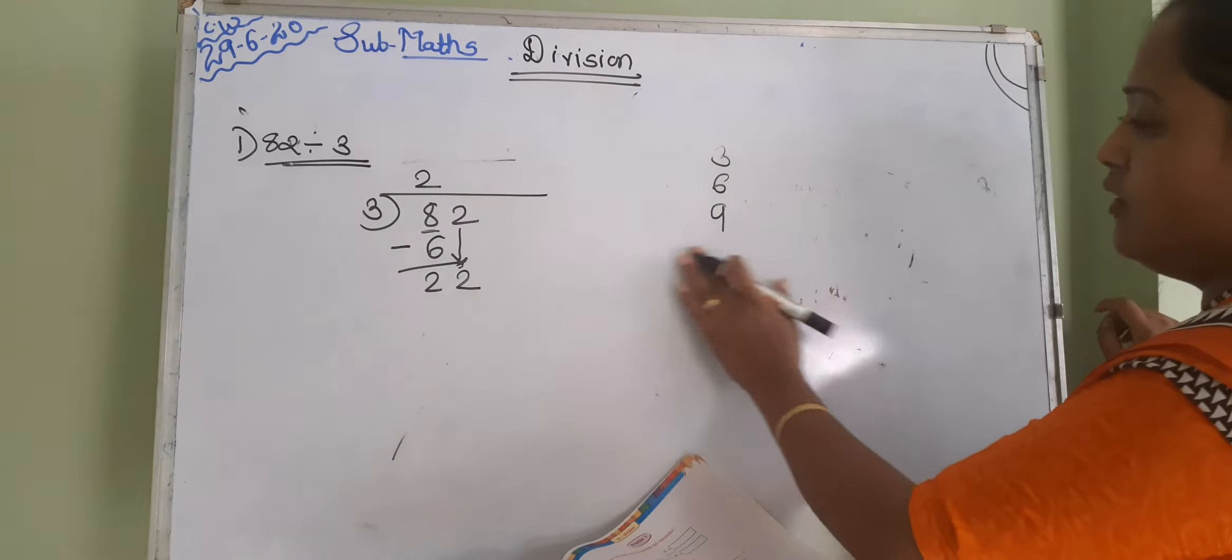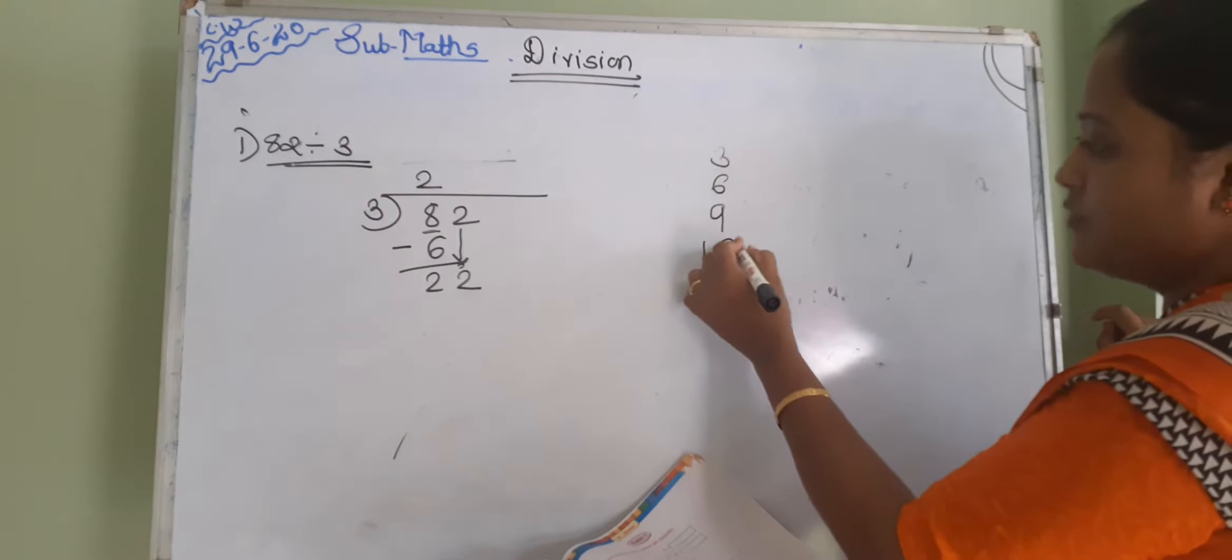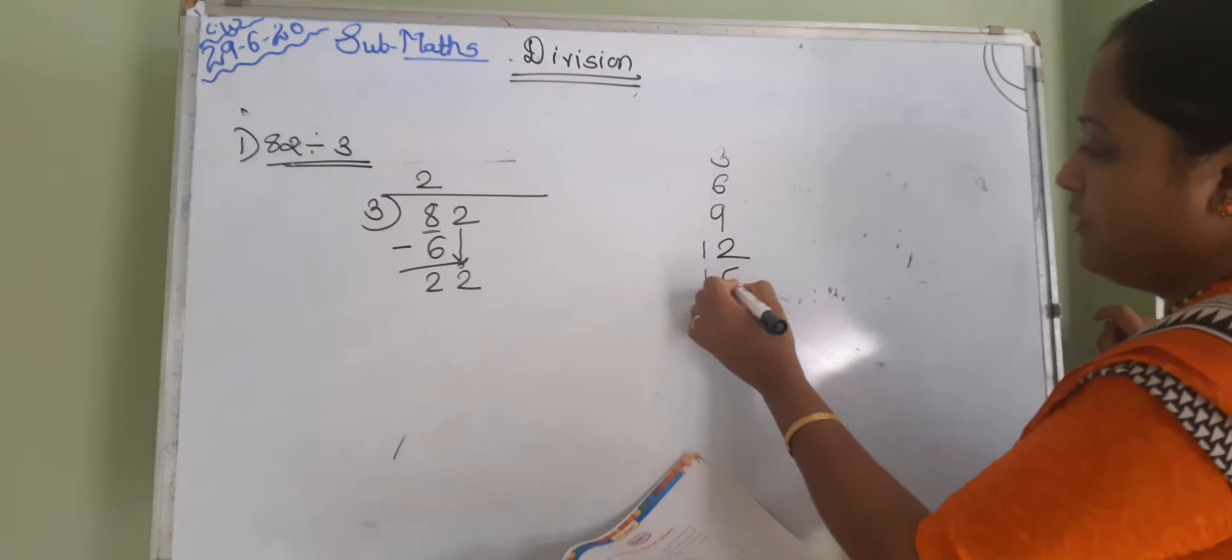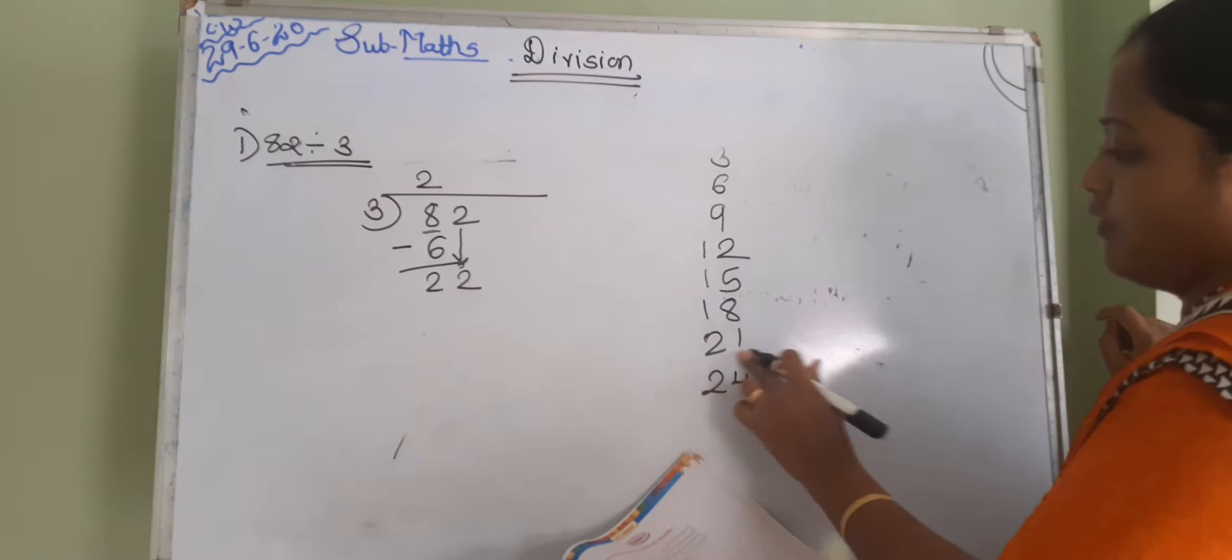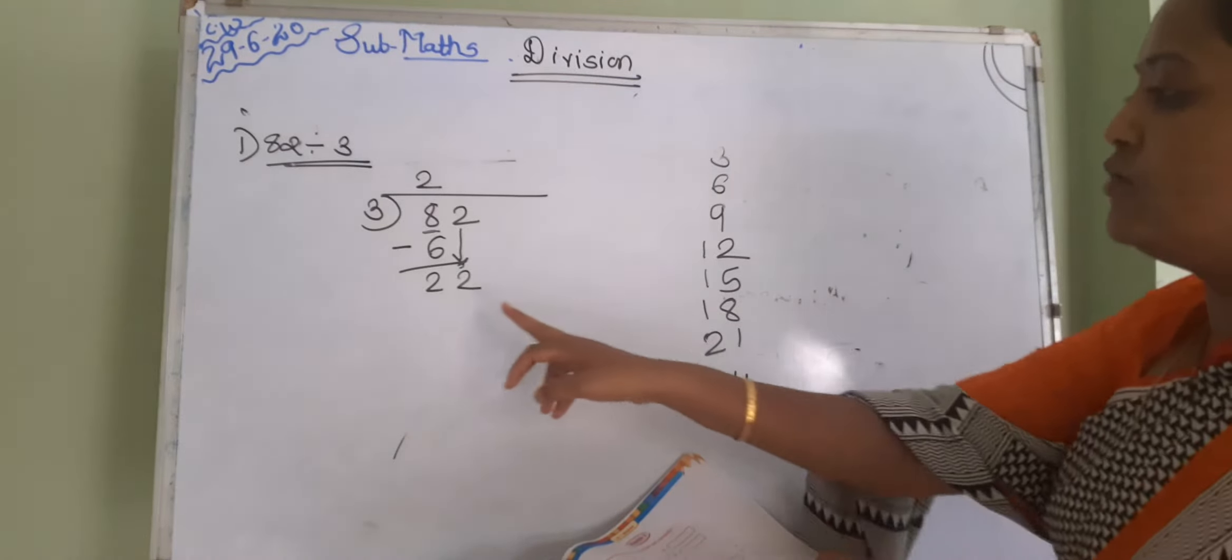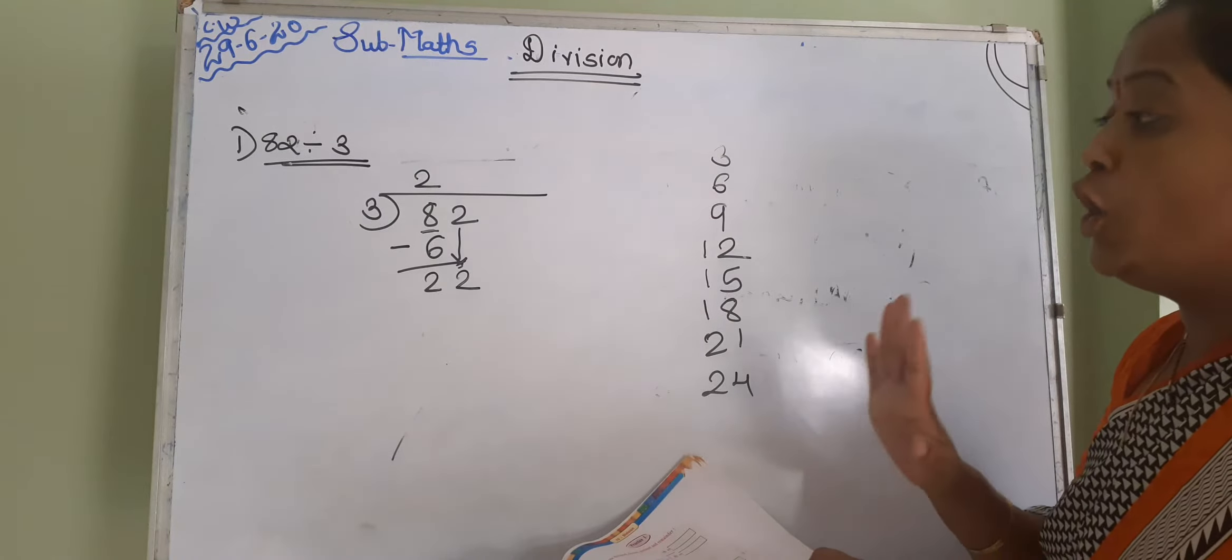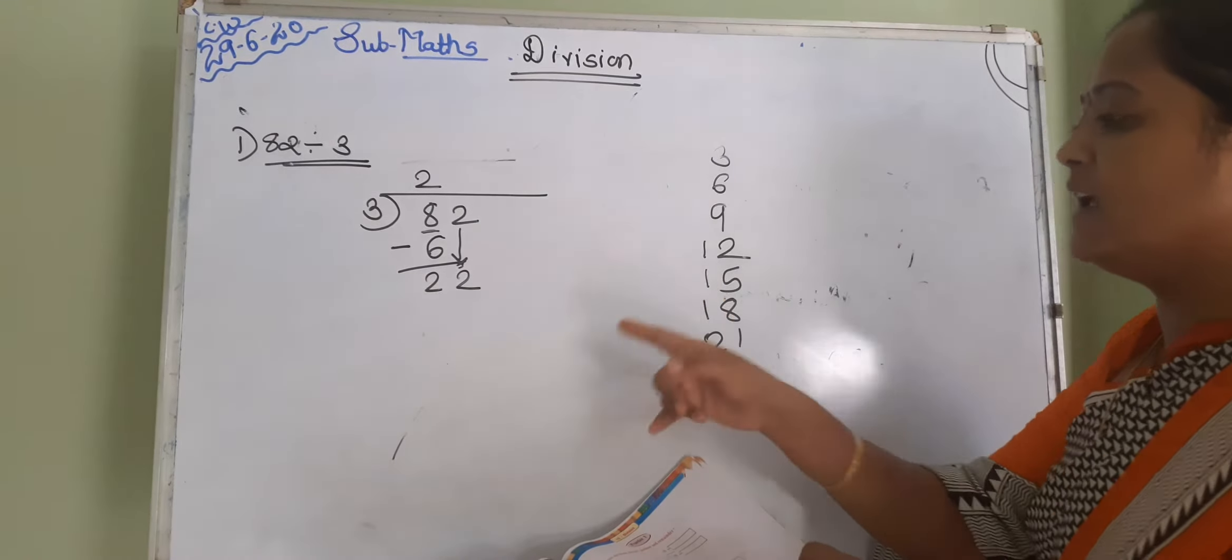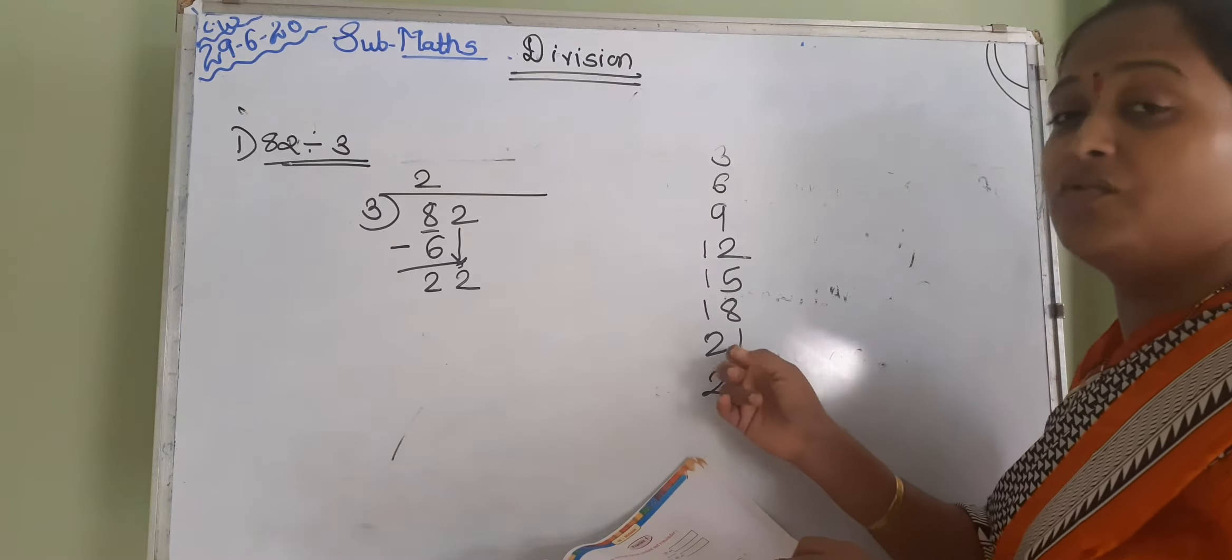और जो remaining number है उसको हम down side पे write करेंगे. So number हो गए, number it will be 22. Again, same method you have to follow. आपको find करना है, 3 threes are 9, 3 fours are 12, 3 fives are 15, 3 sixes are 18, 3 sevens are 21, 3 eights are 24. अभी हमारे number कौन सा है? 22. 22 is there in table of 3? No. तो हम find क्या करेंगे? Below the 22. So below the 22, which number it is? It's 21.